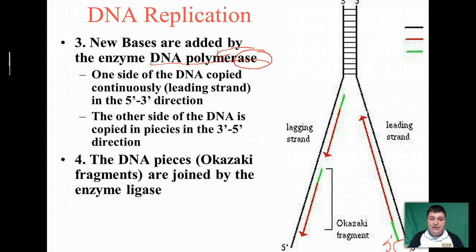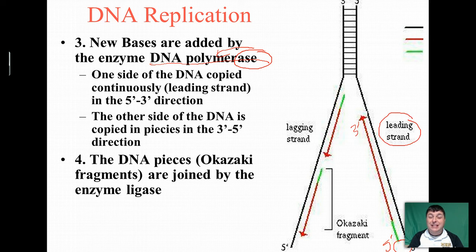As it produces the new strand, at the end is going to be a three-prime. So it attaches to the three-prime and adds new nucleotides from the five-prime to the three-prime end. On one side, this is done continuously — we call this the leading strand.